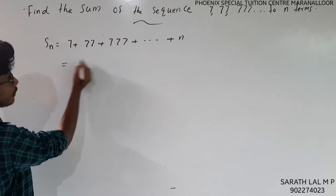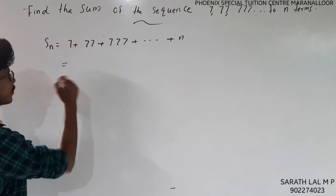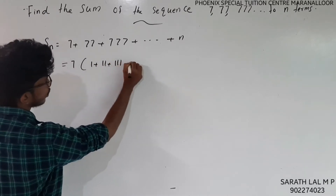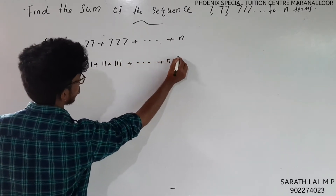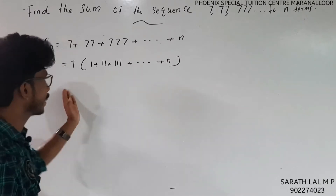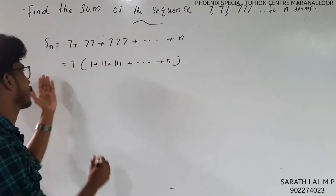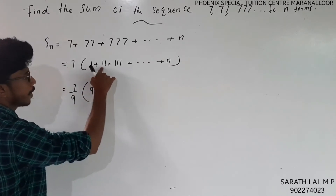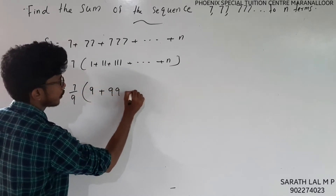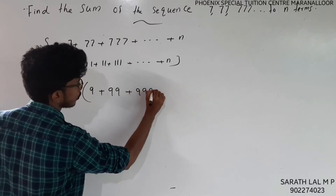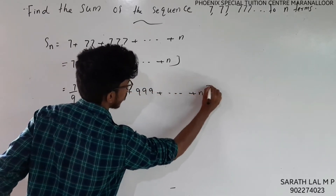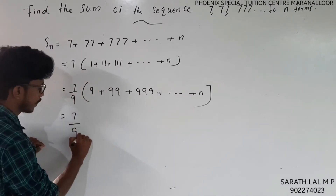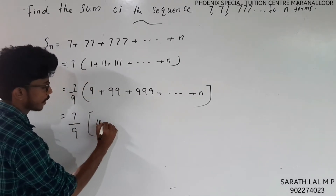When we have a number like 7, we write the sum as 7 times the sum of 1 plus 11 plus 111 plus 1111, and so on, up to n terms. We then multiply and divide by 9, giving 7 by 9 times the sum of 9 plus 99 plus 999 and so on. Each term is of the form 10 minus 1, 100 minus 1, 1000 minus 1, up to n terms.